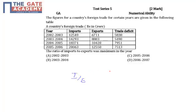Looking at each year: for 2002-2003 the ratio is 1.87, for 2003-2004 it is 1.62, for 2004-2005 it is 1.76, and for 2005-2006 it is 1.6. We can see that in the year 2002-2003 the ratio was maximum, hence the answer is Option A. Thank you.